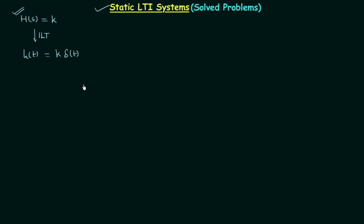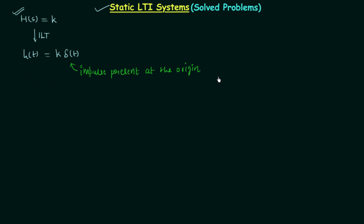So you can check either the transfer function or the impulse response. If the impulse response is equal to the impulse present at the origin, then we can say that the LTI system is a static LTI system. δ(t) is the impulse present at the origin. Whenever the impulse response is not equal to the impulse at the origin, the LTI system is a dynamic LTI system.